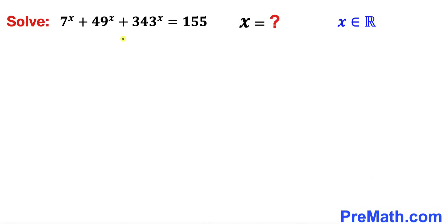In this video we have got this exponential equation: 7 power x plus 49 power x plus 343 power x equals to 155, and now we are going to solve this one. In other words, we are going to find the x value where x are real numbers.